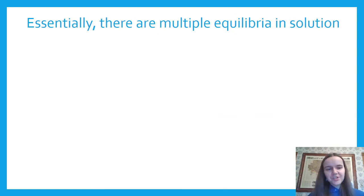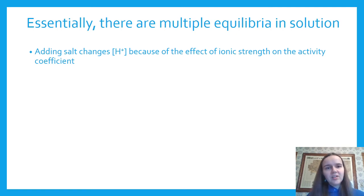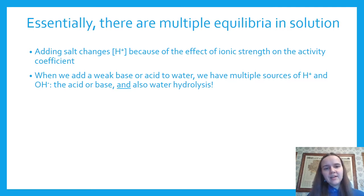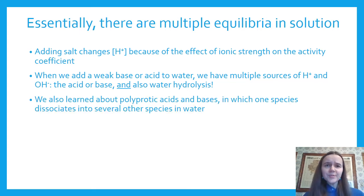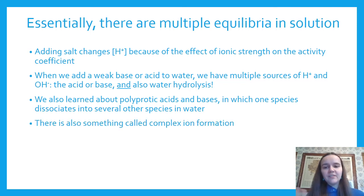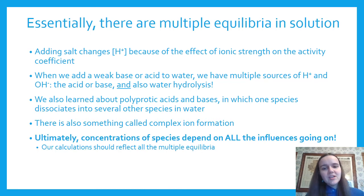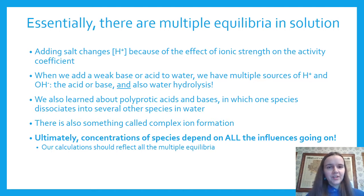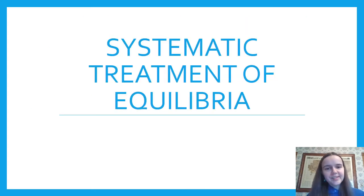Adding salt changes the H⁺ concentration because of ionic strength. When we add acids and bases to water, we have multiple sources of H⁺ and OH⁻ — from the acid/base and from water autoprotolysis. We've dealt with polyprotic acids and bases that speciate into multiple forms, and complex ion formation can also happen. The concentration of everything in solution depends on all of these influences. Our calculations should reflect all of the multiple equilibria, which leads us to the systematic treatment of equilibrium.